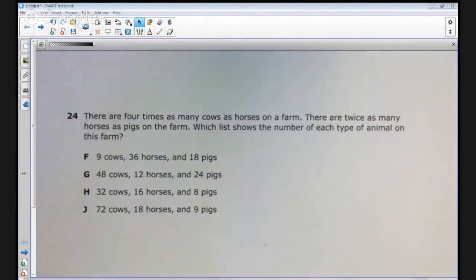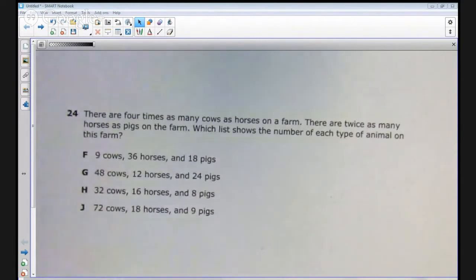Let's read the item. There are four times as many cows as horses on a farm. There are twice as many horses as pigs on the farm. Which list shows the number of each type of animal on this farm?